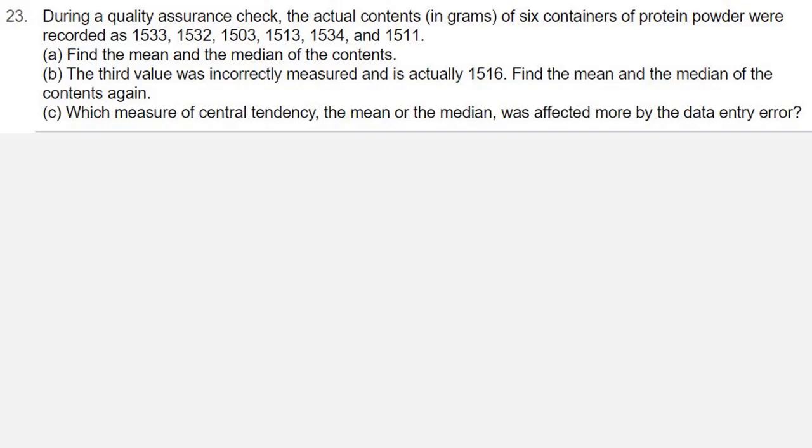Part A: find the mean and the median of the contents. Part B: the third value is incorrectly measured and is actually 1516. Find the mean and the median of the contents again. Part C: which measure of central tendency, the mean or the median, was affected more by the data entry error?